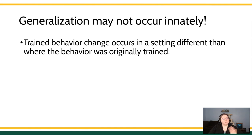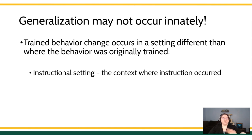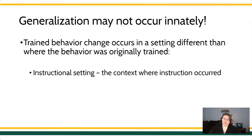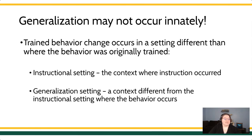Very often when we're doing generalization training, we'll have the instructional setting — the place where we did the original training, where we taught the person what to do. We may be aiming to have that response occur in a new environment somewhere we've never been before. This is called the generalization setting — a context that is different from where we originally taught the behavior. And we have a rich literature on how to actually teach generalization.